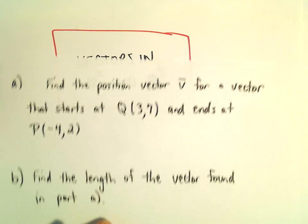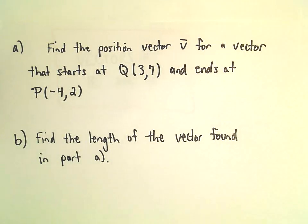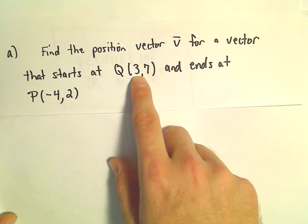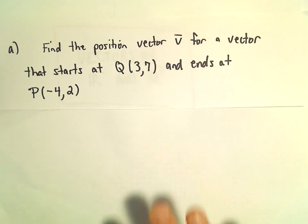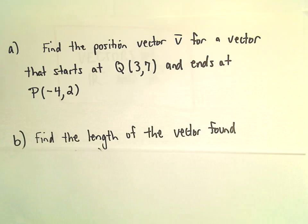All right, in this example, we're going to find a position vector for a vector that starts at the point (3,7) and ends at (-4,2). In part b, we're actually going to find the length of the vector as well.